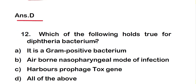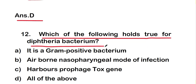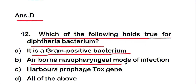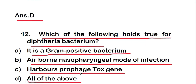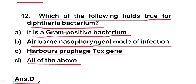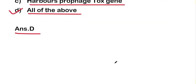Which of the following holds true for the diphtheria bacterium? The options are: it is a gram-positive bacterium, airborne nasopharyngeal mode of infection, harbors prophage toxin, or all of the above. The right answer is option D — all of the above — it is a gram-positive bacterium, has airborne nasopharyngeal mode of infection, and harbors prophage toxin.